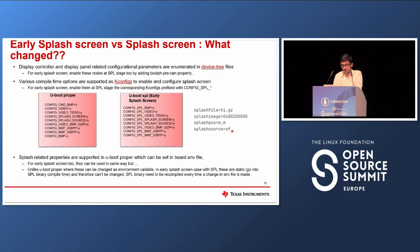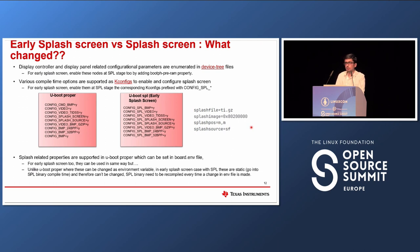For early splash screen, we use the same board.env file. The only difference is that in U-Boot proper these were proper environment variables, so you can change them at runtime at the U-Boot command line. But with early splash screen, these environment variables are static and go inside the binary. If you want to change or update these variables in the SPL, you need to recompile your SPL after updating the variables in the board file.